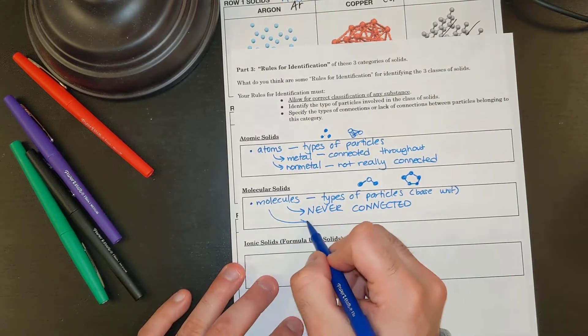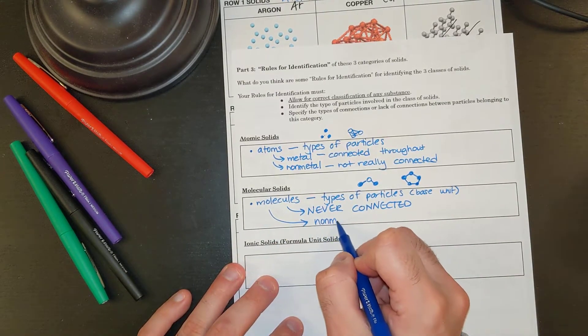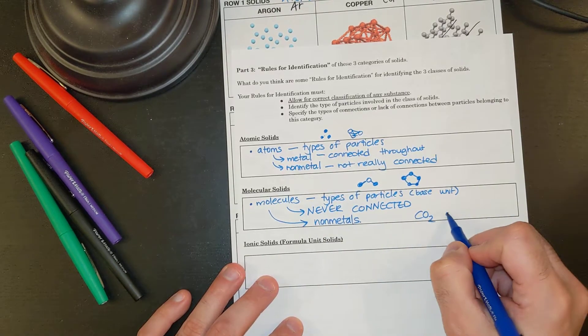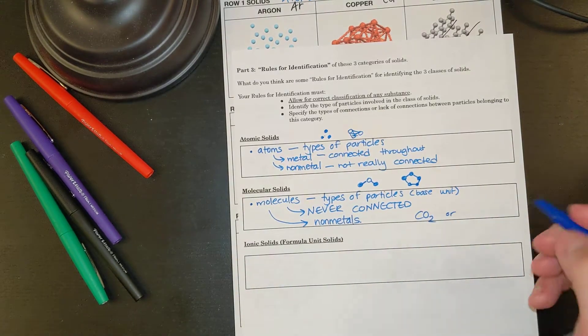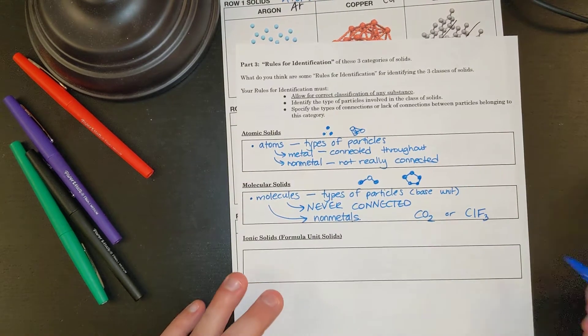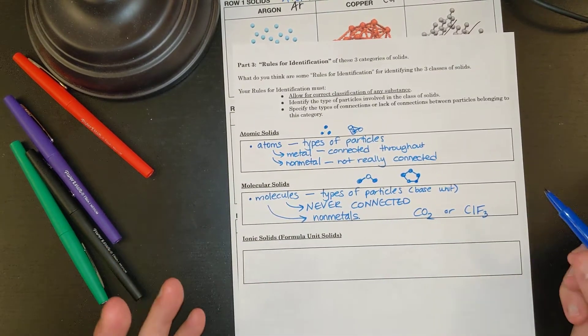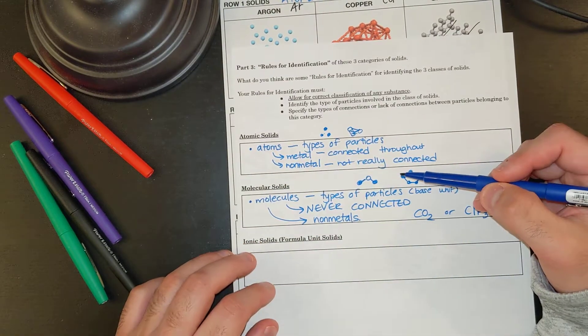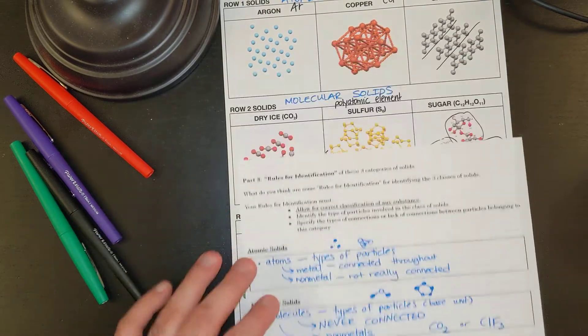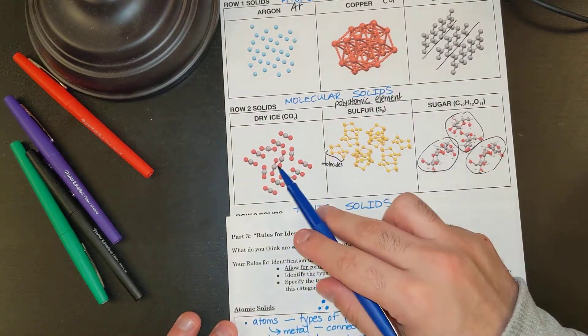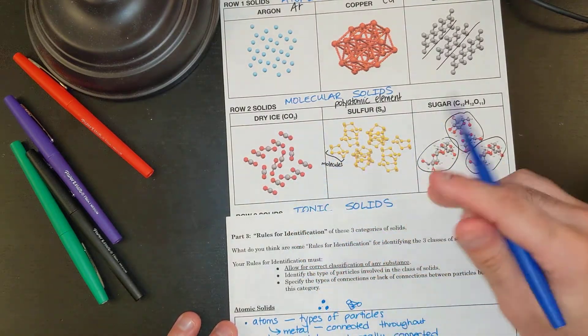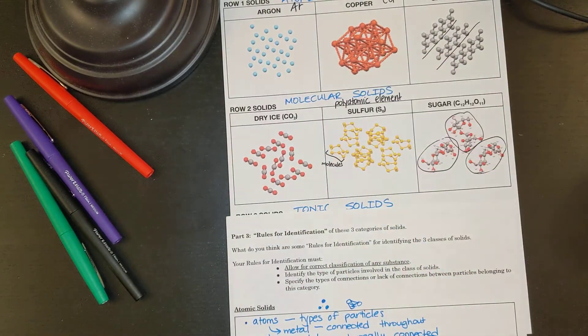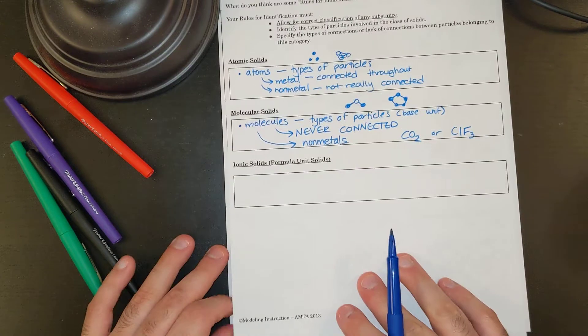Also, these molecules consist of just non-metals. So if I had CO2, or if I had ClF3, these are all non-metals. If I were to see their solid structure, they would be a bunch of molecules, and they wouldn't even be touching. Look at all of our molecules here. For the molecular solids, they are touching within the molecule, but they are not touching between molecules.